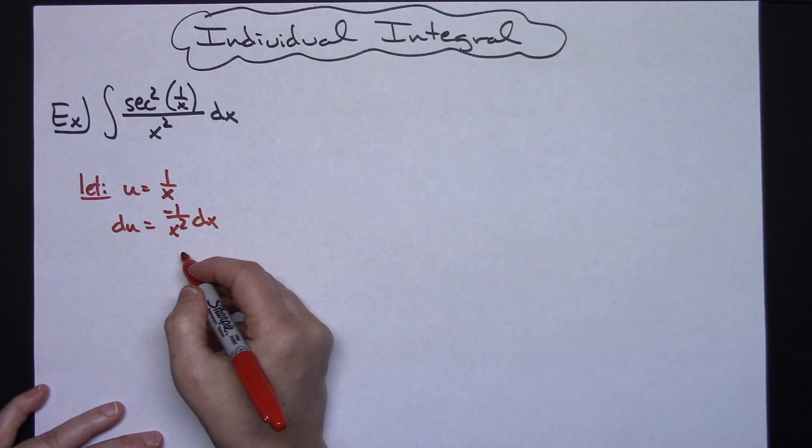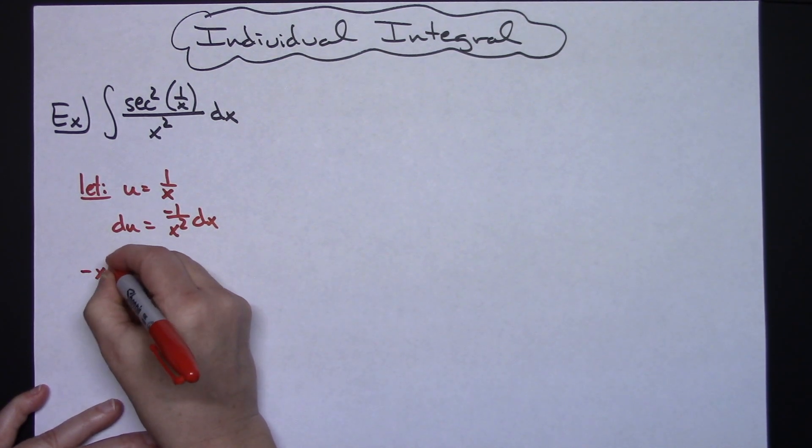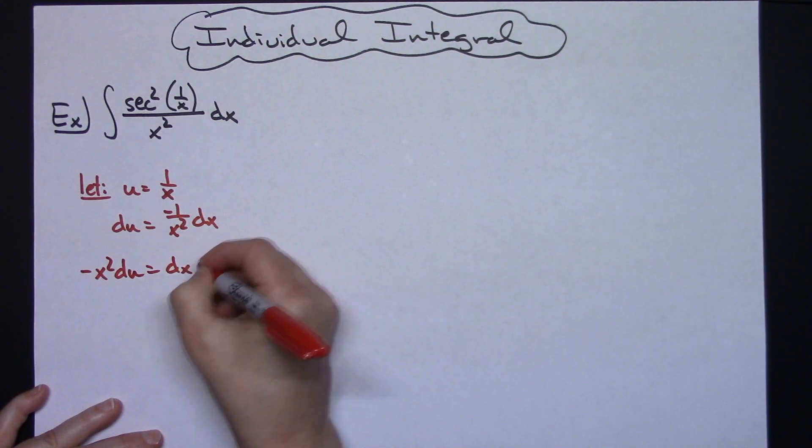And then I'm going to go ahead and solve for my dx. So I'll have a negative x squared du is equal to dx.